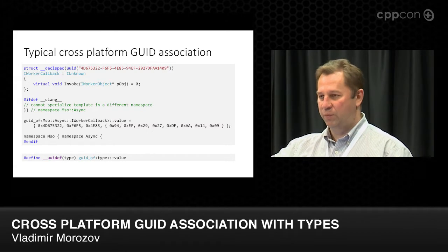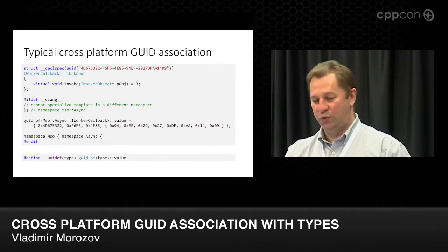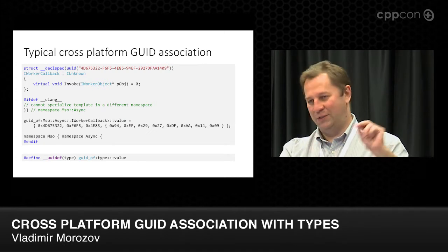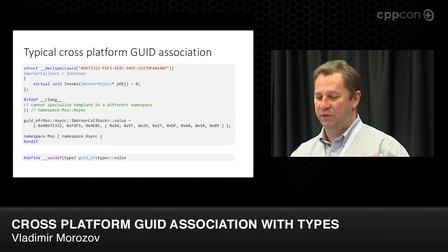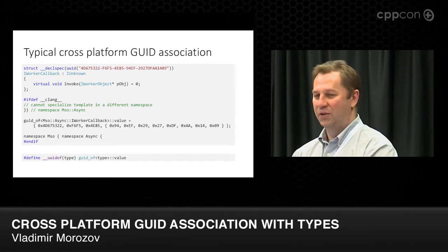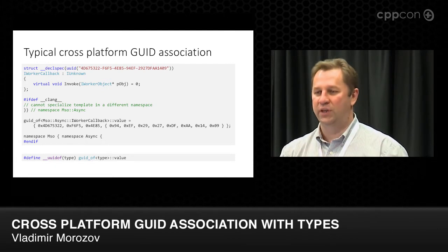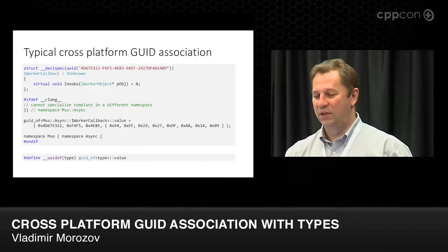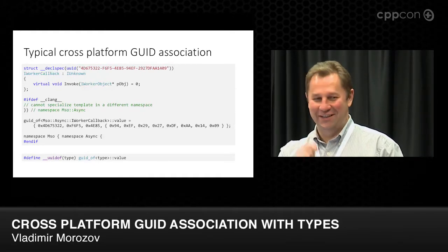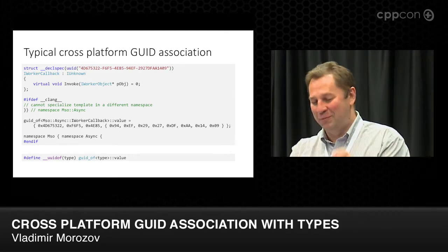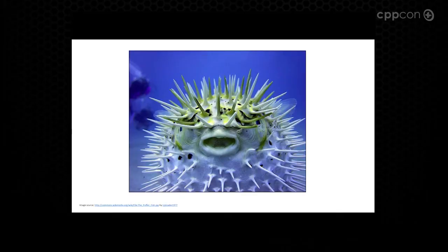We know that template specializations must happen in the same namespace where the template is defined. So if your type happens to be in a special namespace, people may just close that namespace first, do the specialization in the global namespace, then open the namespace again. Another solution is that the GUID definition goes into a different file altogether. But in the end, you have effective code duplication — the same stuff written in multiple places. In one case you have your GUID written as a string, and in another case just a bunch of numbers that are not human readable.